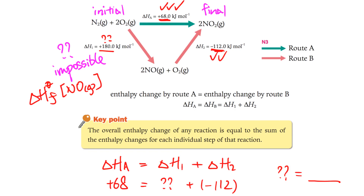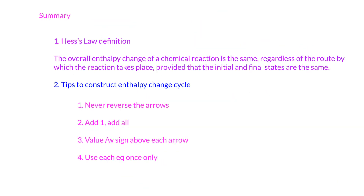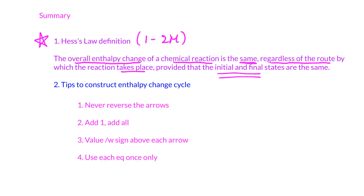To summarize: memorize the definition of Hess's Law — the overall enthalpy change of a chemical reaction is the same regardless of the route, provided the initial and final states are the same. Every single word matters in the exam, as it can be worth one to two marks. We also learned how to construct an enthalpy cycle: never reverse arrows, write values with signs above each arrow, and use every equation only once. In the next video, I'll give you more examples of how to do the enthalpy change cycle properly. That's all for this video — bye!